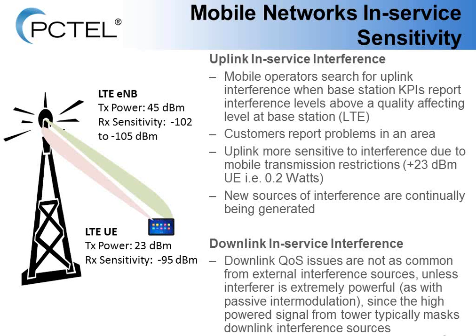New sources of interference are continually being generated. Some operators see new interference popping up every few days or every week. On the downlink side, interference can also occur, but it's not as common because it's usually masked by the extremely powerful signal from the LTE base station, so downlink testing is not done very often. However, in the case of passive intermodulation, this can be a reason to test the downlink in service, since it can be very powerful and cause significant interference.